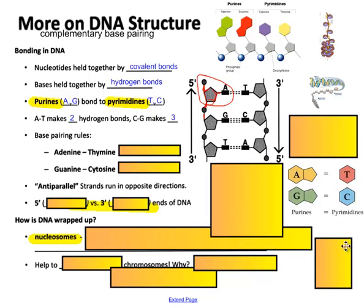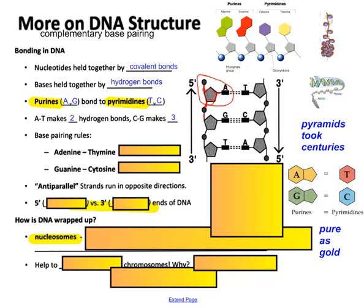Pyrimidines are T and C. Here's how I remember that. Remember this phrase, pure as gold. It will help me remember that purines are A and G. Pure as gold. Purines, A and G. What about pyramids? Yeah, pyramids. For pyrimidines, you can remember this. Pyramids took centuries. So that's P for pyrimidines, sounds like pyramids, and then T and then C. That should help you with that a little bit.